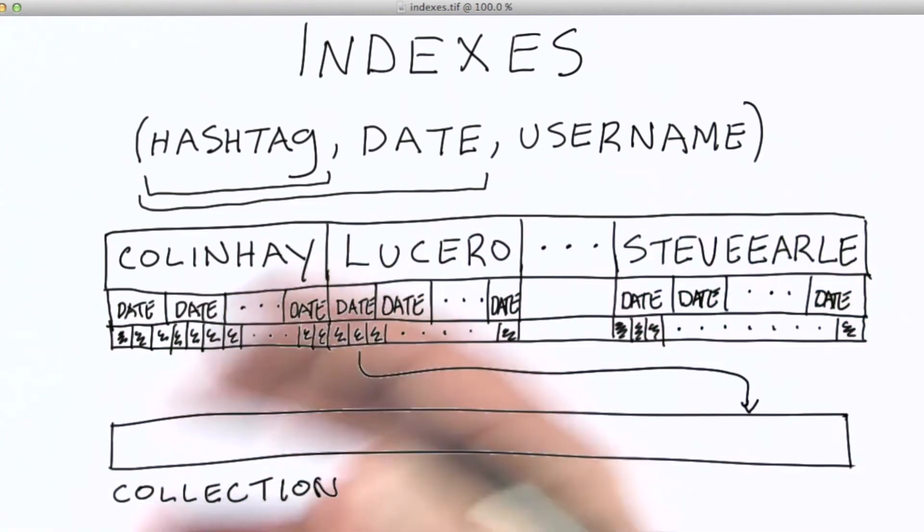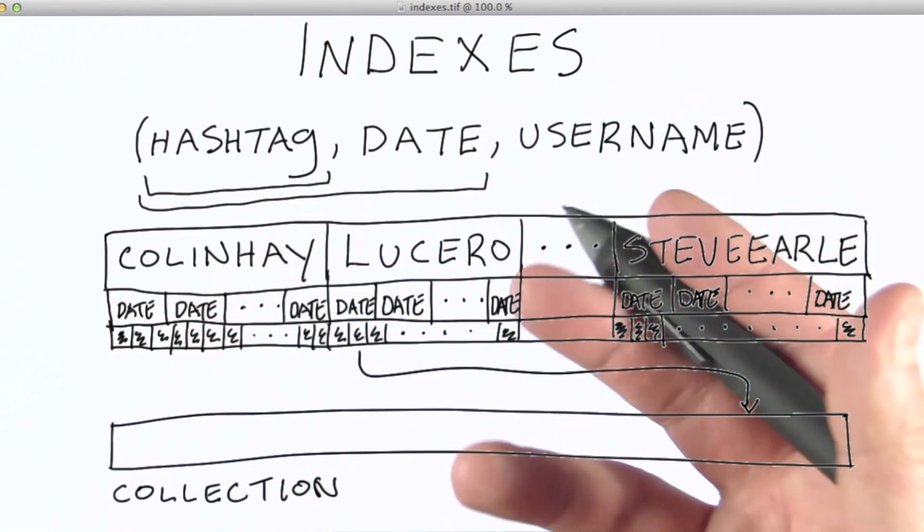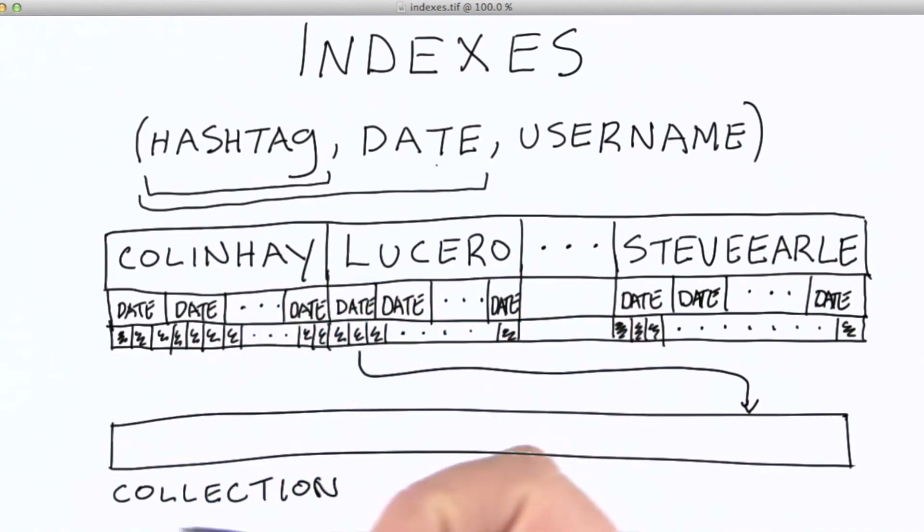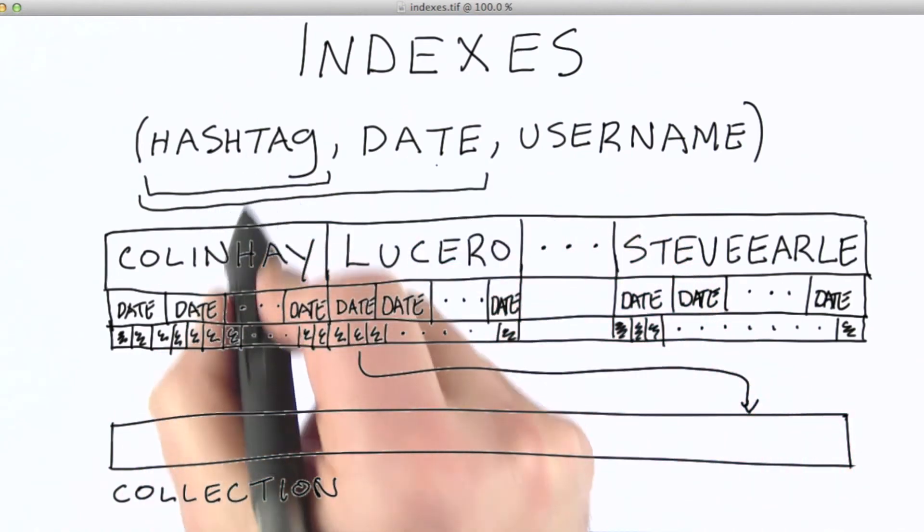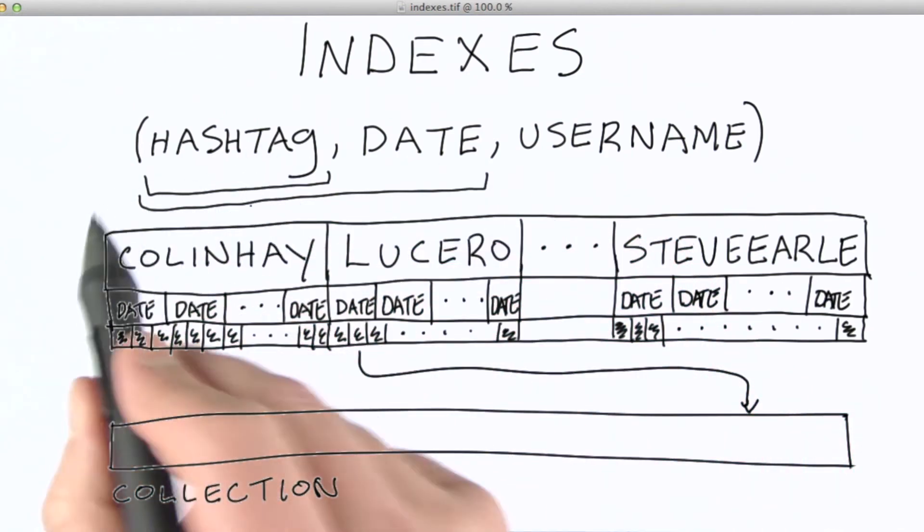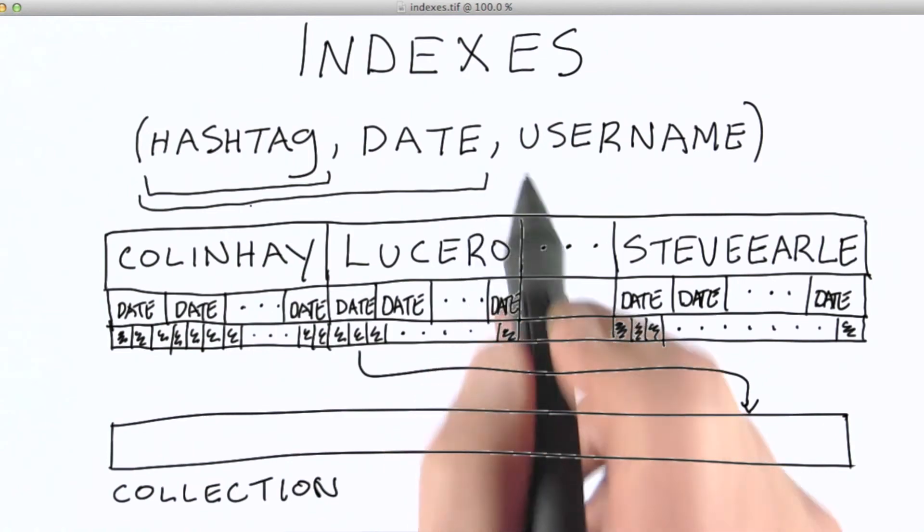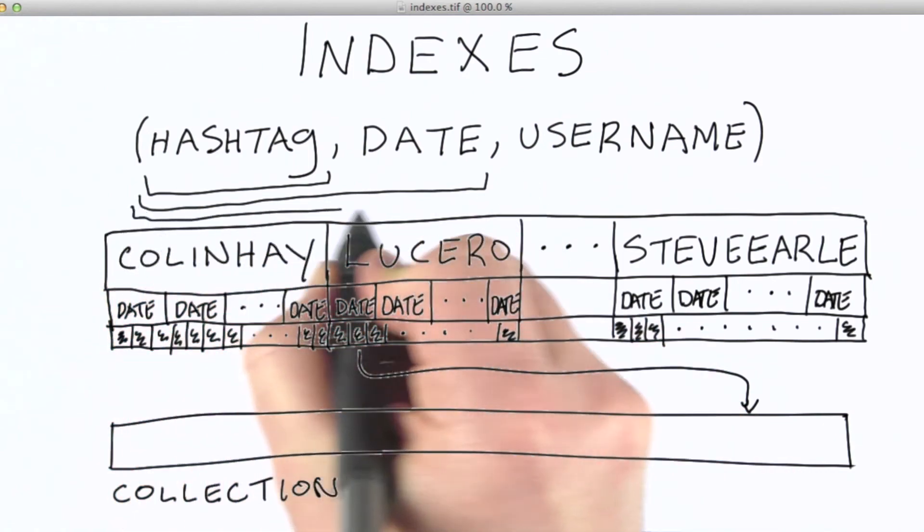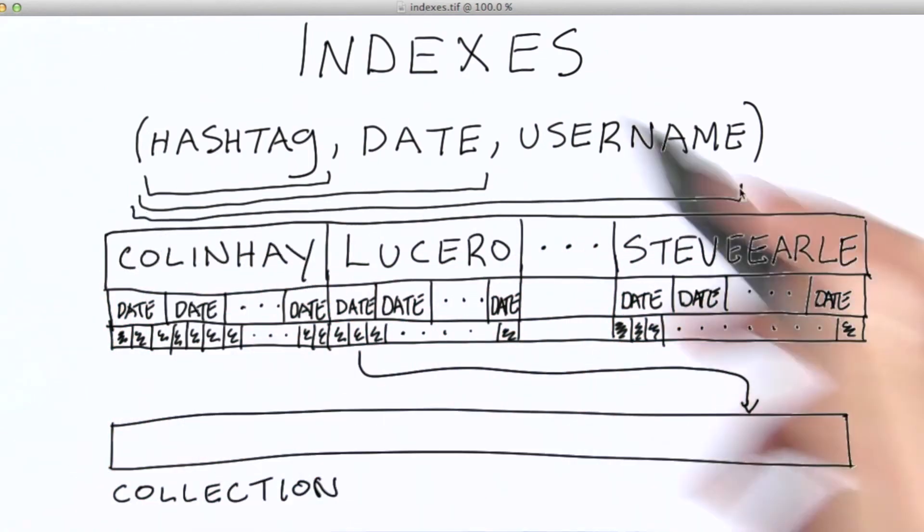Now, in order for MongoDB to utilize an index, you have to give it a leftmost set of items. So, you can give it just the hashtag, or you can give it just the hashtag and the date, or the hashtag, the date, and the username. For this particular index, if you provide me just the date, I can't do much really with the index, because the date is down here at this level.